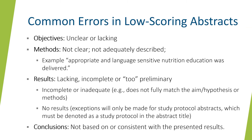Common errors in low-scoring abstracts include objectives that are unclear or lacking, and methods that are not clear or adequately described. An example is stating 'appropriate language and sensitive nutrition education was delivered' — as you can see, the methods in this example are not properly defined. Results that are lacking, incomplete, or too preliminary are also common errors. Sometimes the results may be inadequate and not fully match the aim, hypothesis, or methods. All abstracts must include results. Exceptions will only be made for study protocol abstracts, which must be noted as a study protocol in the abstract title. Another common error is conclusions that are not based on or consistent with the presented results.